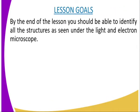We are going to have the following lesson goals which should be reached by the end of the lesson. You should be able to identify all the structures as seen under the light and electron microscope. As you are aware, there are two microscopes — the light and electron microscope — and the structures seen under each of them are varying.